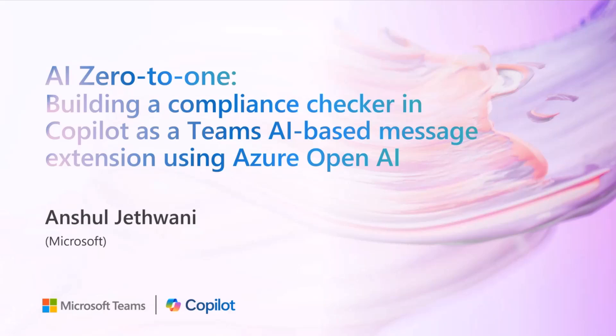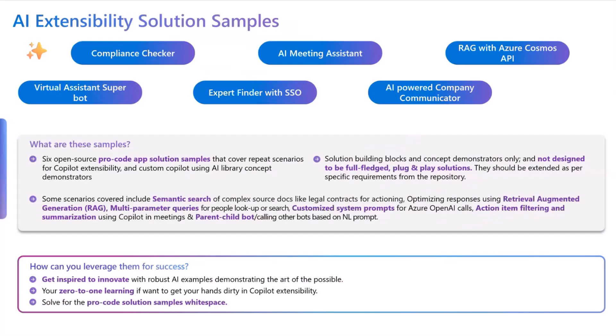This is super cool. I think it's a great scenario where you can come in and if you have multiple bots deployed, you can actually use Azure OpenAI and calls to Azure OpenAI to find out the intent and then route that particular intent to whatever skill bot that you may have deployed. In this case, we use two different skill bots.